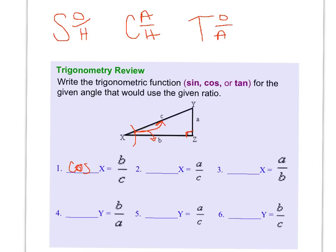And in this next one we are still looking at angle X. This time we want A over C. So if I look at my picture, A is opposite and C is still the hypotenuse. So if I look up at my three trig functions, SOHCAHTOA, opposite over hypotenuse is sine. So therefore this one is the sine of X is equal to A over C.